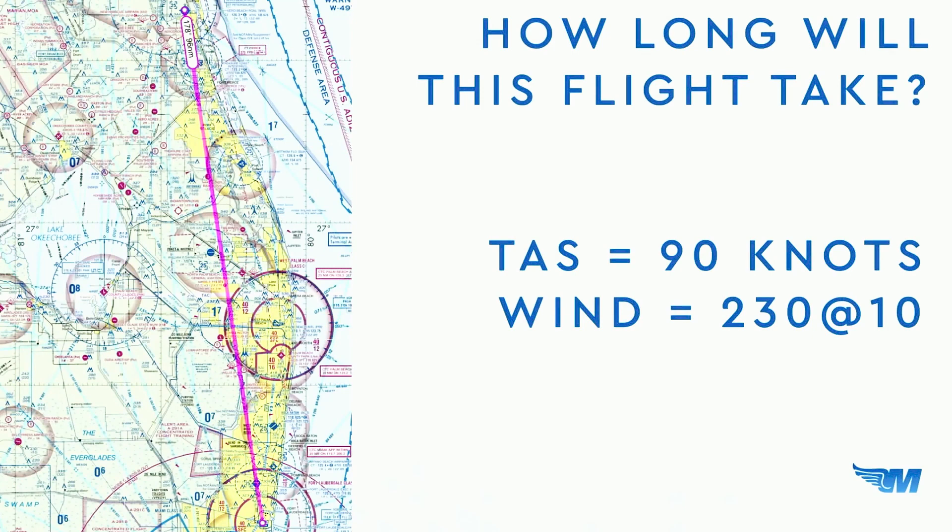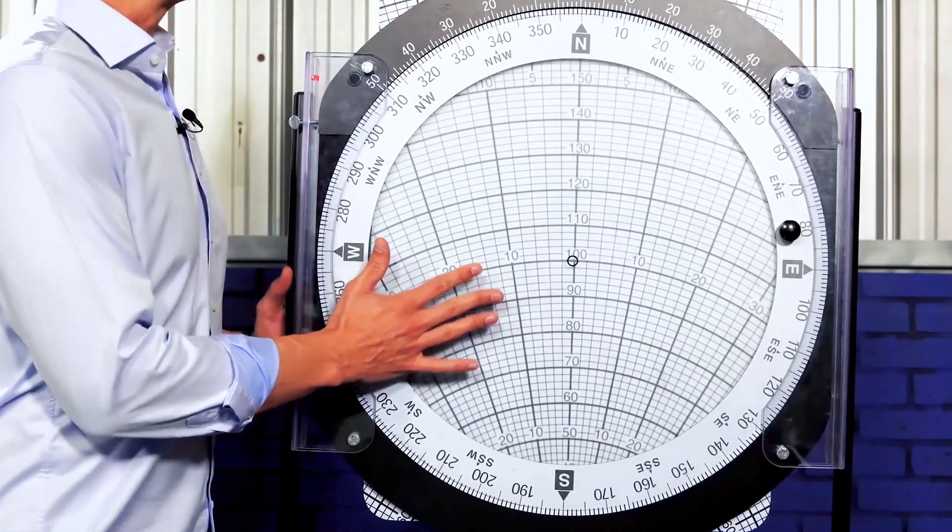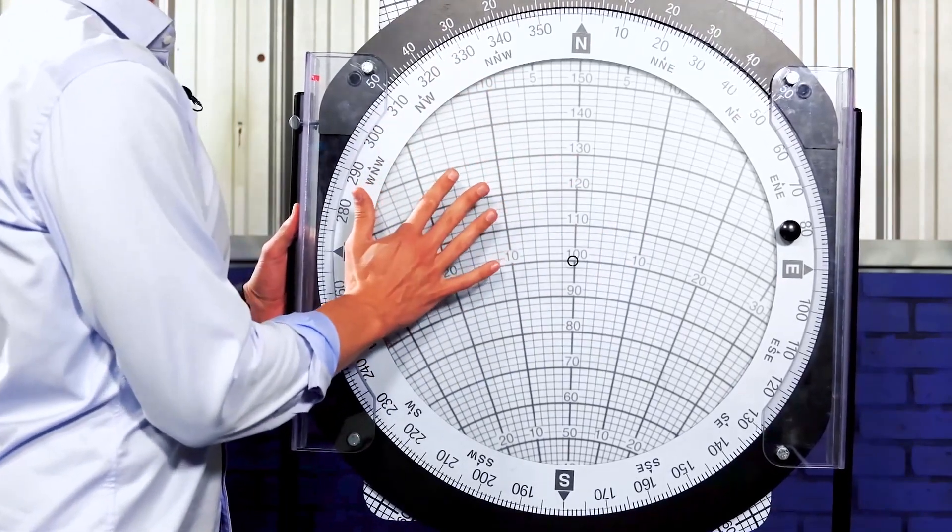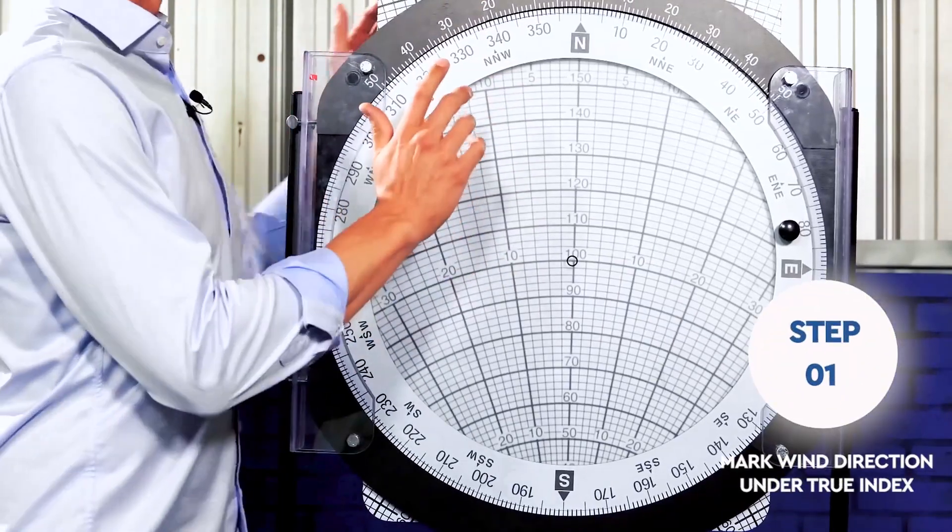So our first question says, how long will this flight take? Our true airspeed, as you can see, is 90 knots. Our wind is from 230 at 10. If you look in the top left of your screen, let's call that a true course, just for the sake of this argument. I show a 178, and then I also show 96 nautical miles as we go down the coast of Florida from north to south. So for this, we're going to start on the wind side. We have, and we're going to start on the wind side, we have some instruction. Mark wind direction under the true index.